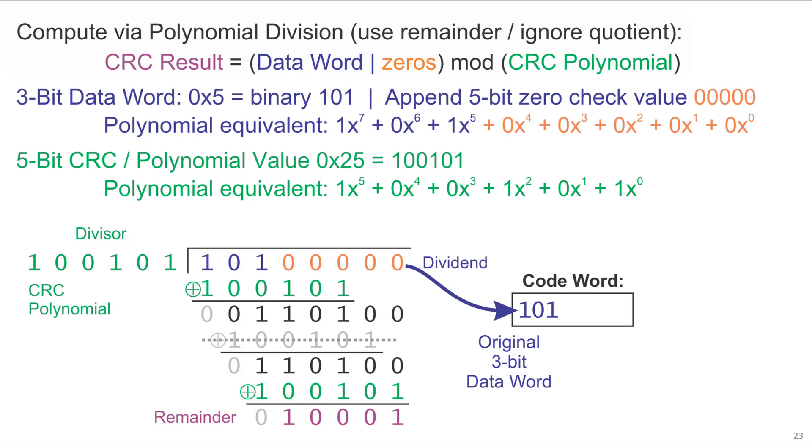But now we know what the check value is for this CRC. In fact, it's the remainder from this polynomial division, so the remainder is 10001, and that gives us a codeword that has a 3-bit data word and a 5-bit check value.